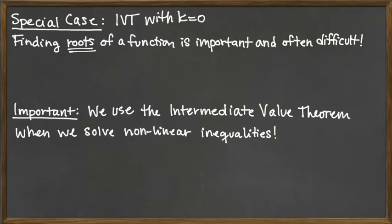A special case of the Intermediate Value Theorem is when the particular y value that we care about happens to be k equals 0. k equals 0, or the y value equal to 0, would be the x-axis. And so for the Intermediate Value Theorem, the question we would really be asking that would correspond to the k equals 0 case would be, what are the roots of a function?